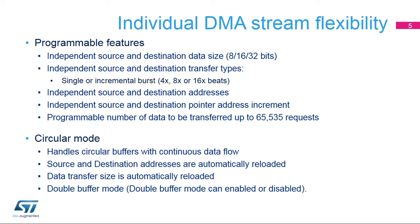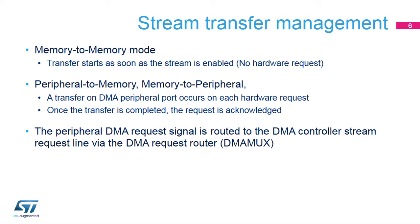Circular buffer mode is available to support a continuous flow of data. The source and destination addresses and the number of data to be transferred are automatically reloaded after the complete transfer. Double buffer mode allows switching between two memory buffers managed by hardware. Memory-to-memory mode allows transfers from one address location to another without a hardware request.